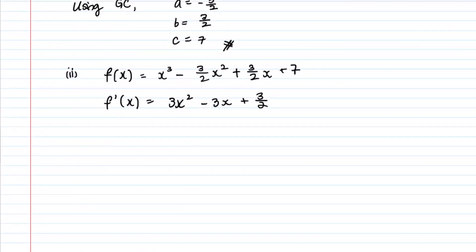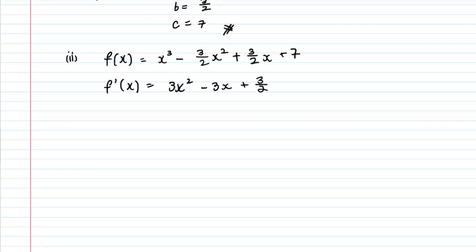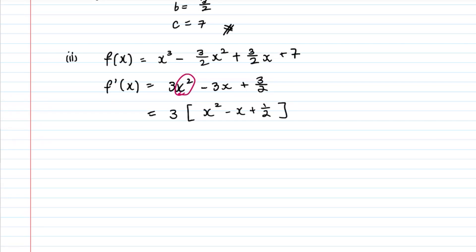To show the gradient is always positive, we use completing the square. This method will determine whether f'(x) is always positive or negative. First, ensure the coefficient of x² is 1 — so factor out the 3: f'(x) = 3(x² − x + 1/2).